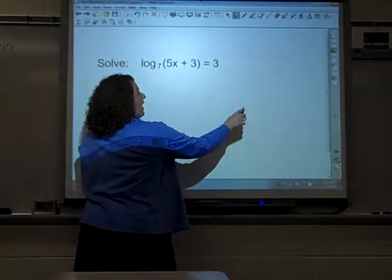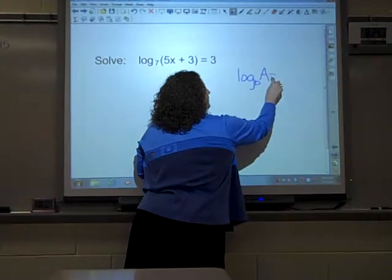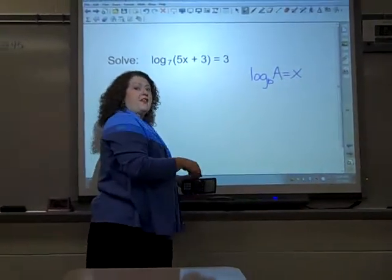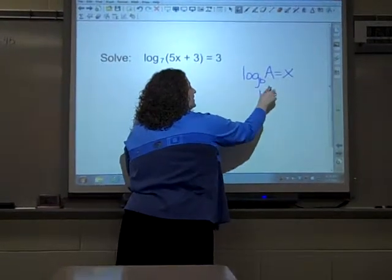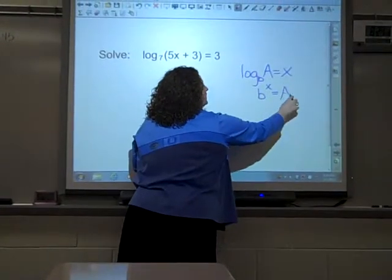So we're using the property, the log of base b to get some argument is equal to x. And we want to rewrite that in exponential form. The base to the exponent x is equal to this argument.